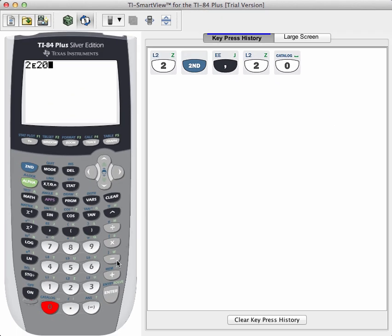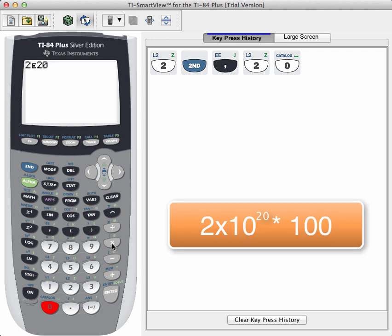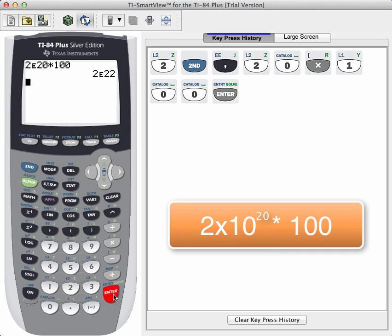Now if you want to use this in actual mathematics, this process is very simple. Let's take that 2 times 10 to the 20th and let's multiply it by 100. So now we get 2 times 10 to the 20th times 100. When I hit enter, it will give me 2 times 10 to the 22nd. Multiplying something by 100 should add two more zeros to the end of the number, which means our exponent is going to move out two more times and we get 22nd instead of 20.